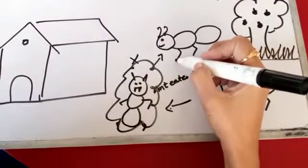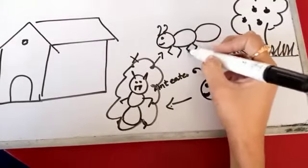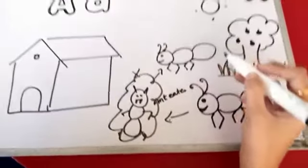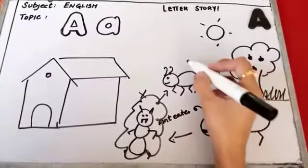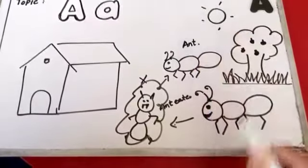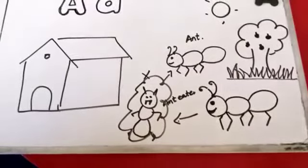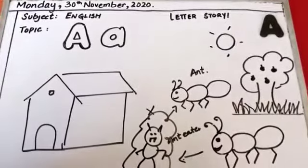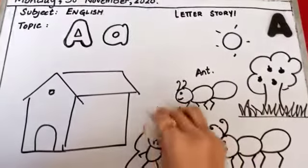Then the baby ant became happy. So they were happy again with her mother. The anteater was beaten by mama ant.